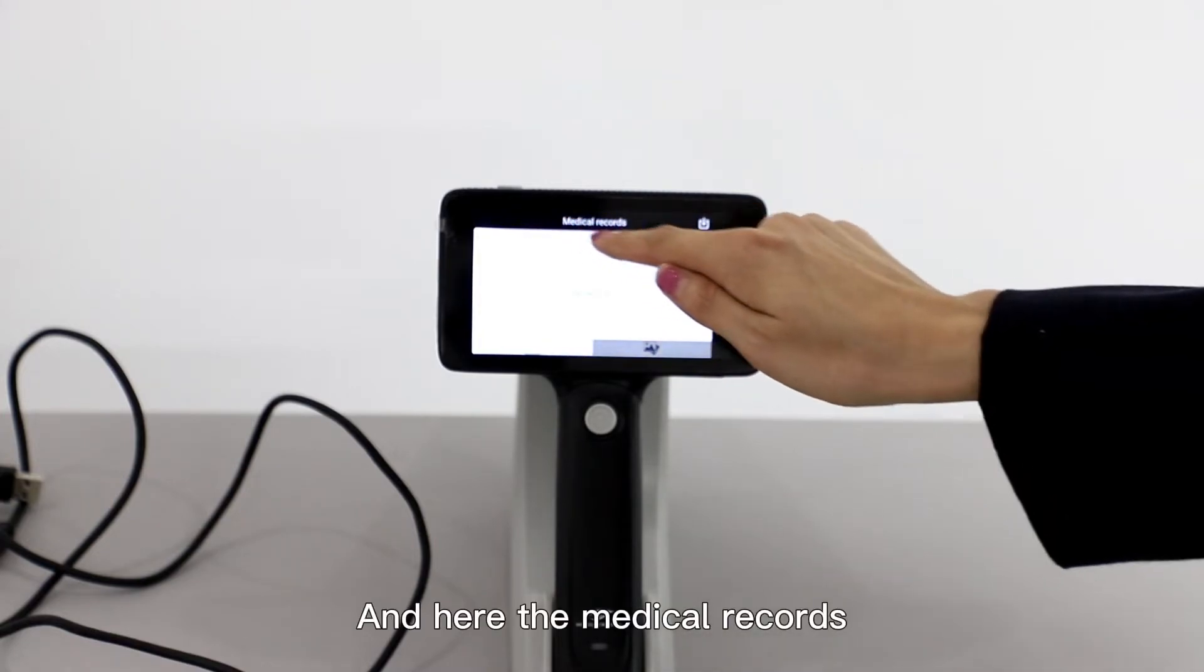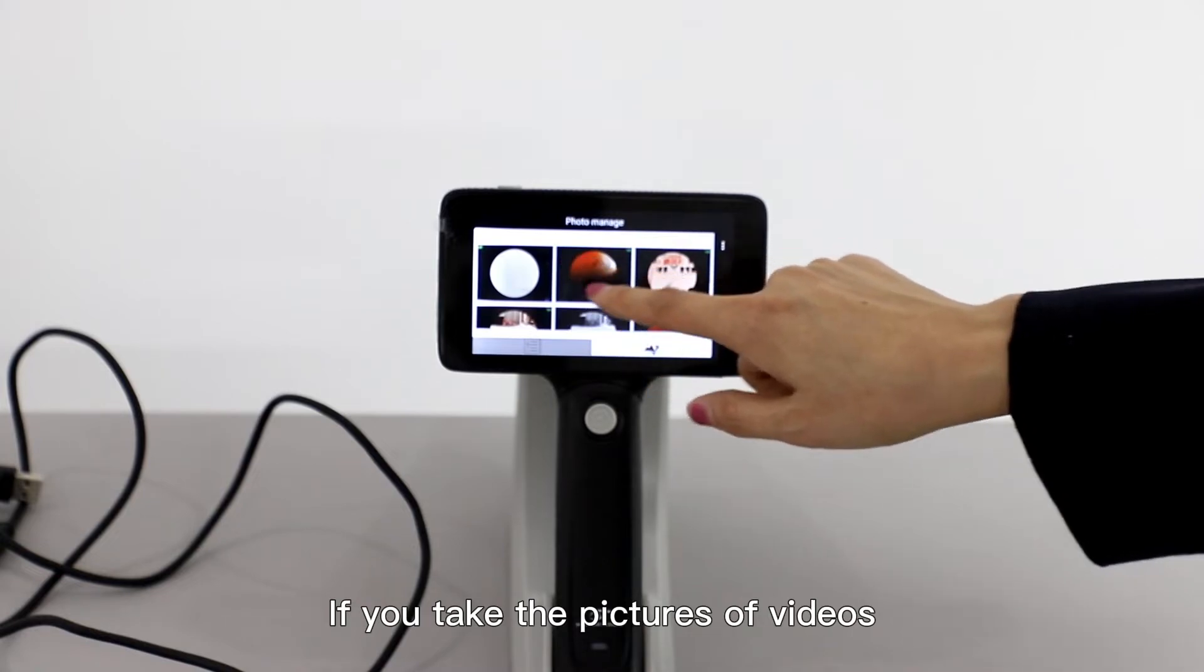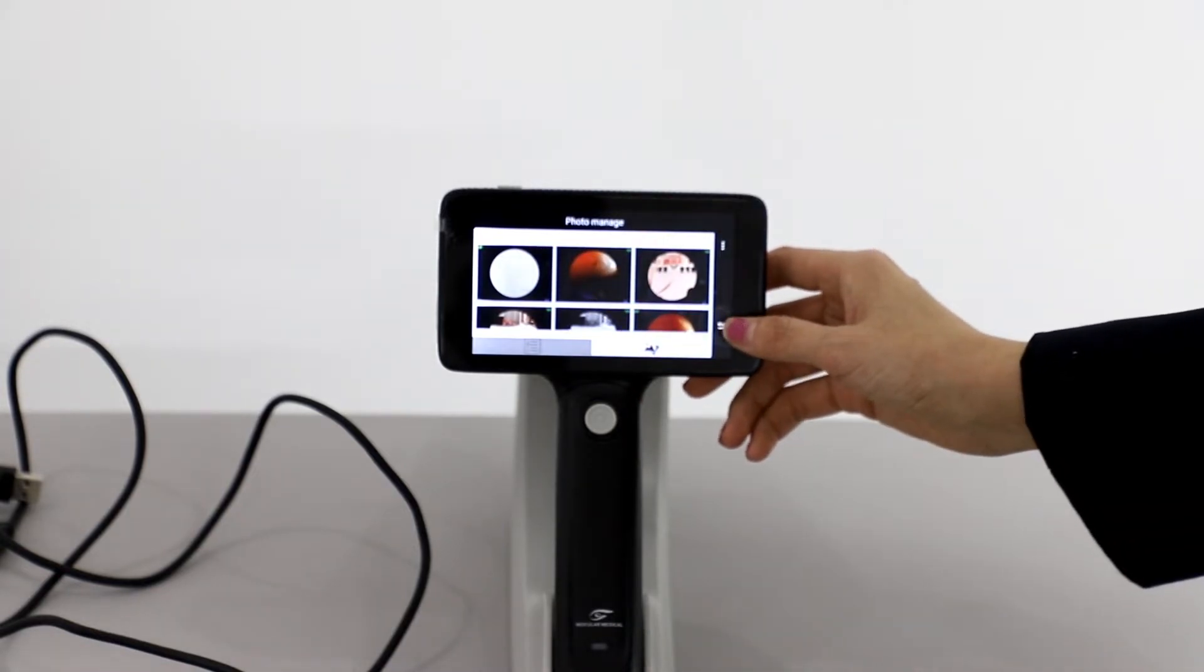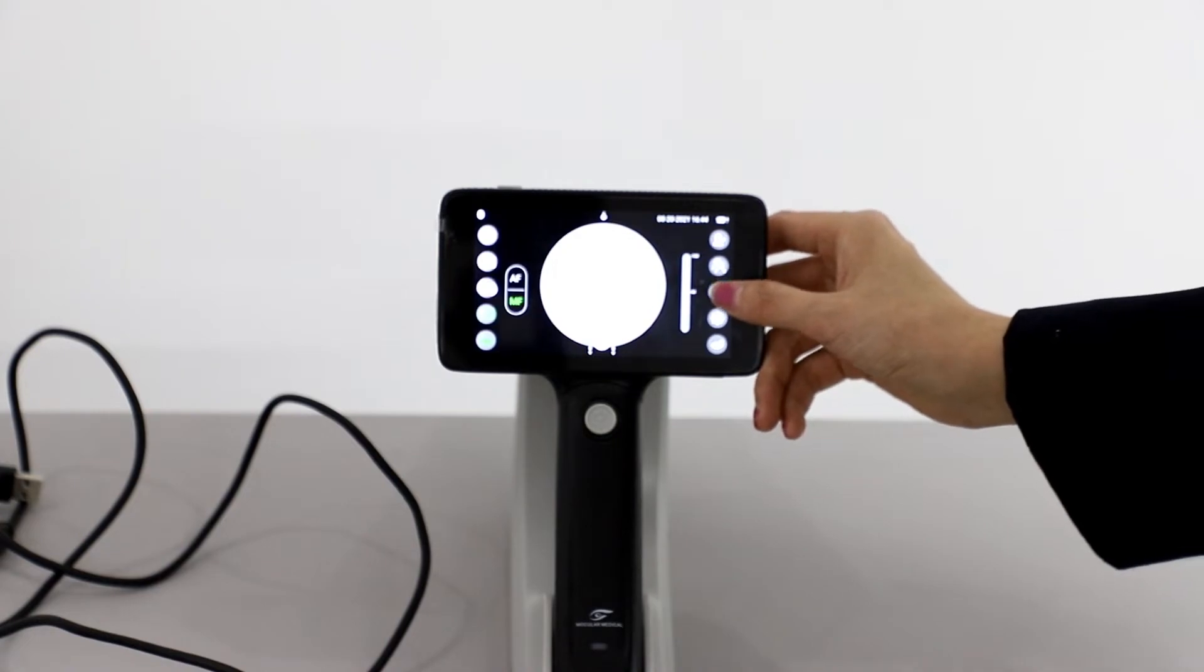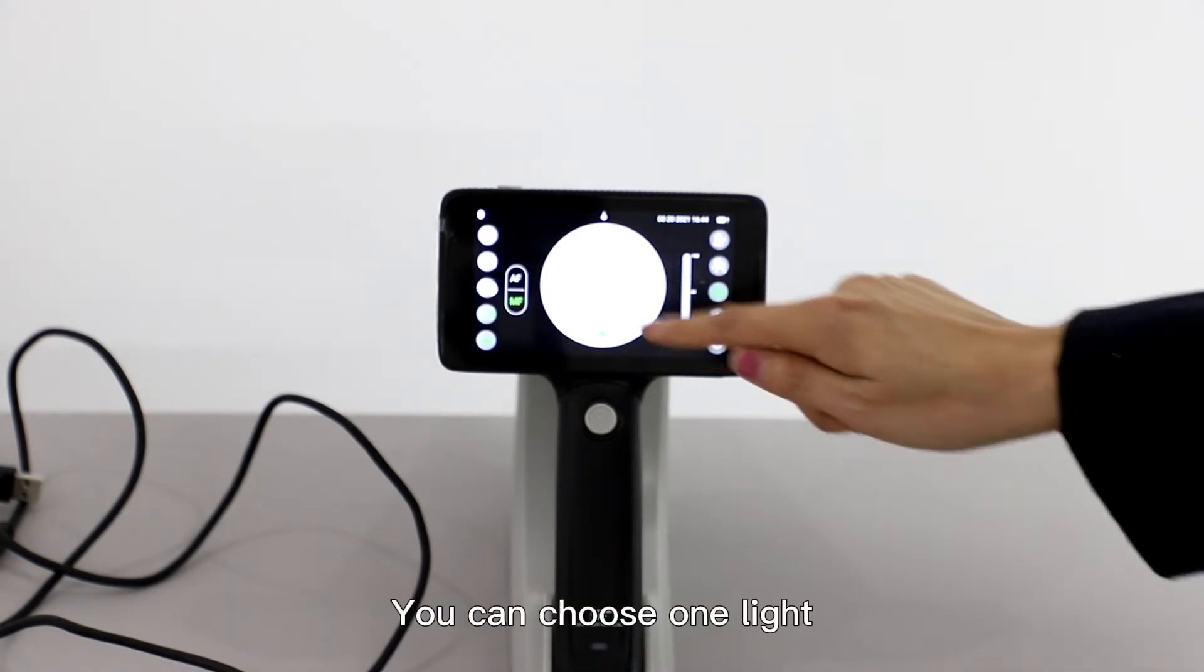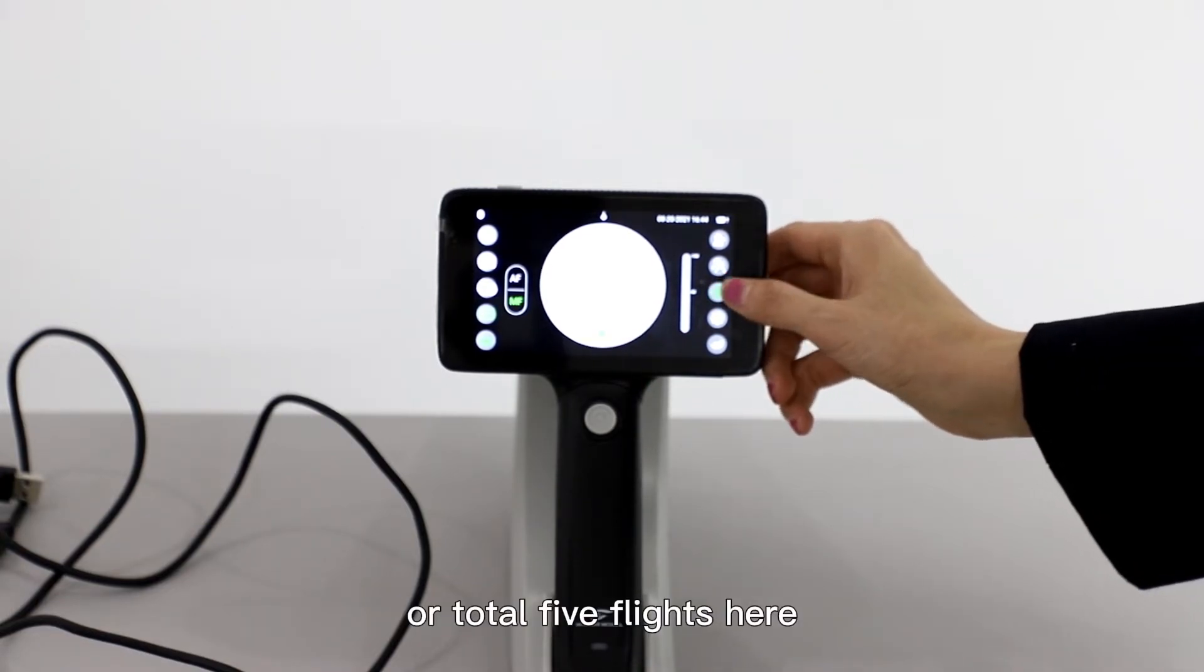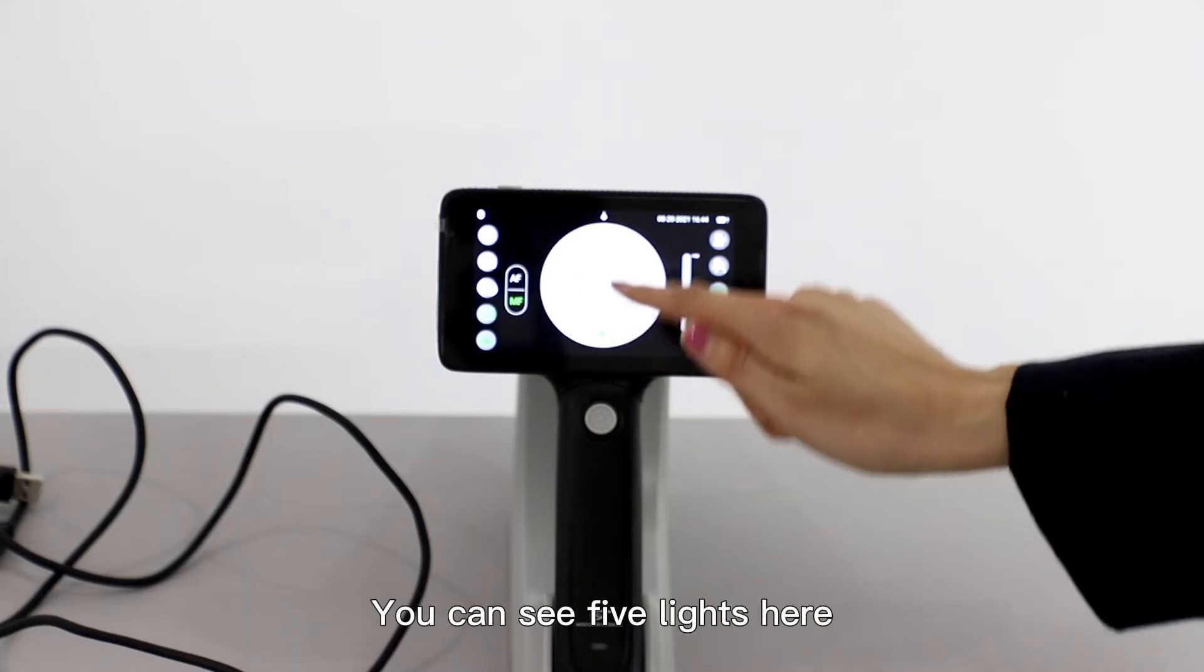Here are the medical records. If you take pictures or videos, they will be shown here. This is the fixation light. You can choose one light or total five lights here.